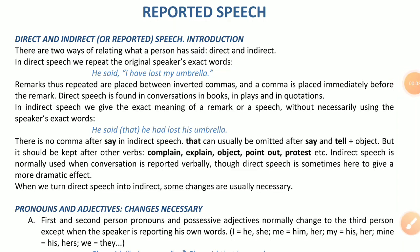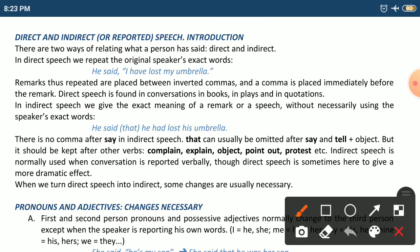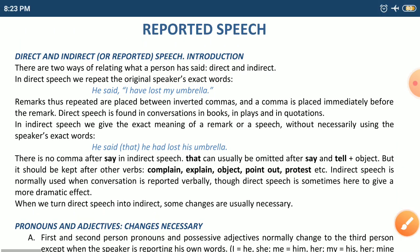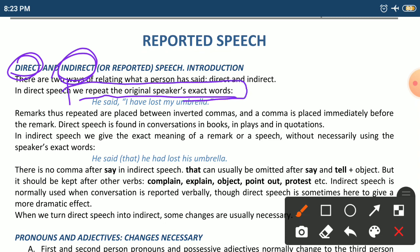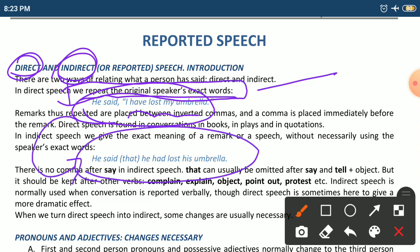Welcome, dear students. In today's session we are going to study about reported speech. Reported speech is nothing but indirect speech. We have two ways of saying things. We repeat the original speaker's exact words — for example: he said, 'I have lost my umbrella.' Notice the comma and inverted commas used in direct speech.